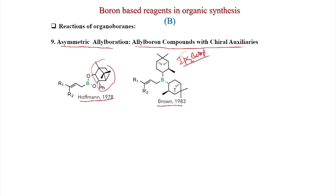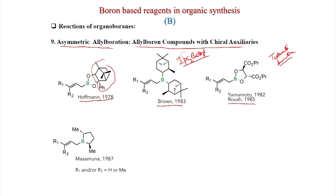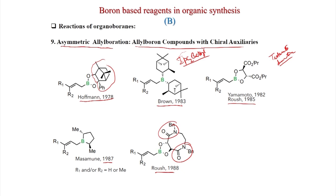Isopinocampheyl boron allyl compounds are powerful chiral auxiliaries. The tartrate derivative incorporated in the allyl boron system was employed by Yamamoto and Roush. Also, C2-symmetric chiral boron was incorporated by Masamune in 1987 as a useful allylating reagent. Roush came up with a cyclic bisamide incorporated in the allyl boronic acid system. Corey came up with an N-tosyl 1,2-diphenylamine C2-symmetric allyl boron reagent.